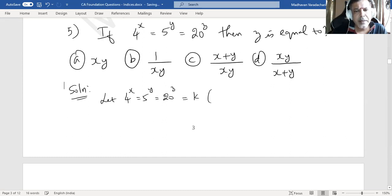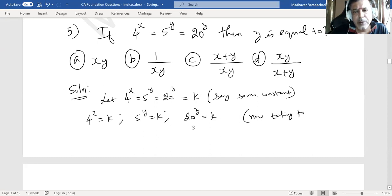Now we can individually write it as 4 power x equal to k, 5 power y equal to k, and 20 power z equal to k.